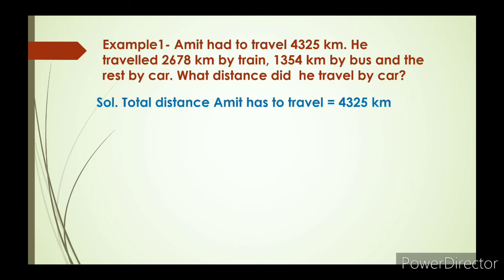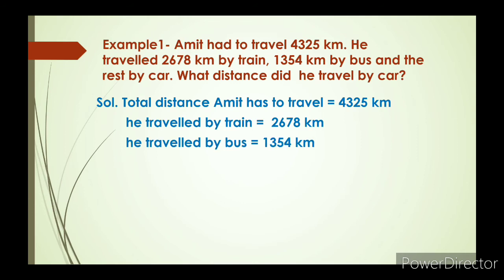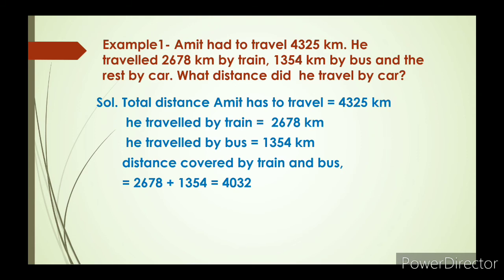Total distance Amit had to travel is 4325 km. He travelled by train 2678 km and by bus 1354 km. We add these two distances — how much he travelled by train and bus. After adding we get 4032 km.